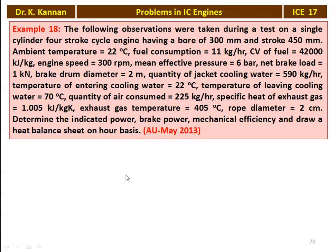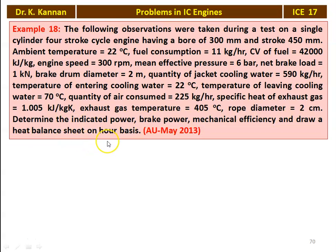Example number 18 from the May 2013 question paper. The following observations were taken during a test on a single cylinder four-stroke cycle engine: bore 300 millimeter, stroke 450 millimeter, ambient temperature 27 degree Celsius, fuel consumption 11 kilograms per hour, calorific value 42,000 kilojoules per kilogram, engine speed 300 RPM, mean effective pressure 6 bar, net brake load 1 kilo Newton, brake drum diameter 2 meter, quantity of jacket cooling water 590 kilograms per hour, temperature of entering cooling water 22 degree Celsius, temperature of leaving cooling water 70 degree Celsius, quantity of air consumed 225 kilograms per hour, specific heat of exhaust gas 1.005 kilojoules per kilogram Kelvin, exhaust gas temperature 405 degree Celsius, rope diameter 2 centimeter. Determine indicated power, brake power, mechanical efficiency, and draw a heat balance sheet on the hour basis.